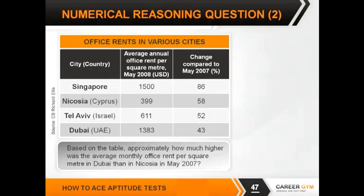Numerical reasoning questions were flagged by several of you in the pre-questions as something you'd like to practise, so let's give you more time on question 2, and then after this we'll move on to the abstract reasoning test. You've got one chart: 'Based on the table, approximately how much higher was the average monthly office rent per square metre in Dubai than in Nicosia in May 2007?' A word of warning — read the wording carefully to get the correct scale, and specifically note the word 'monthly' versus 'annual'. Good luck!